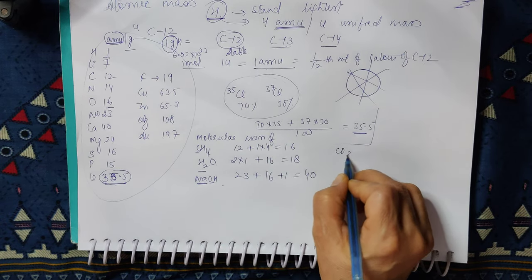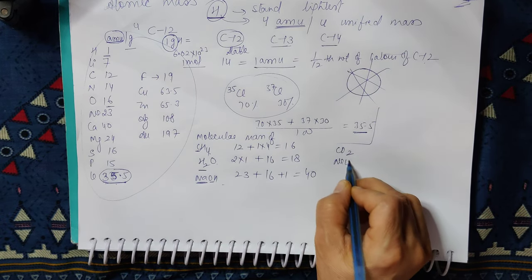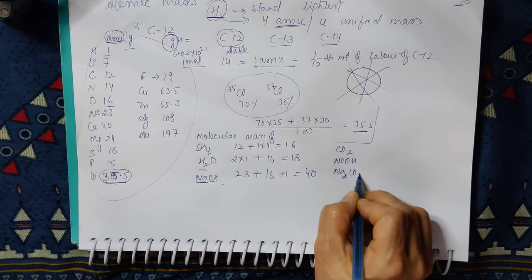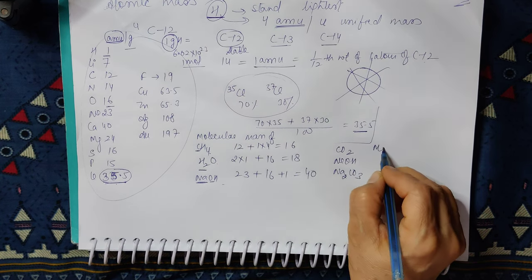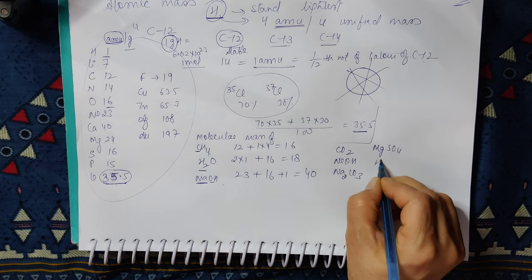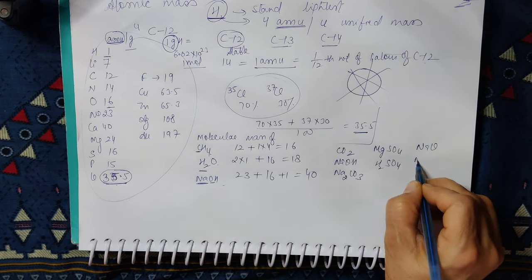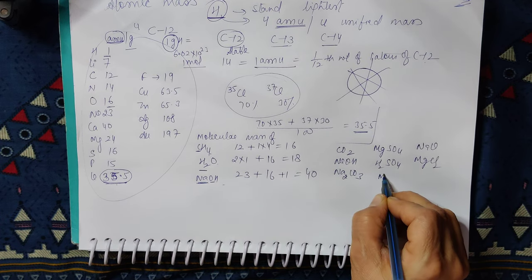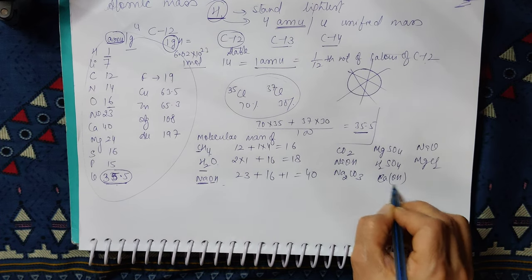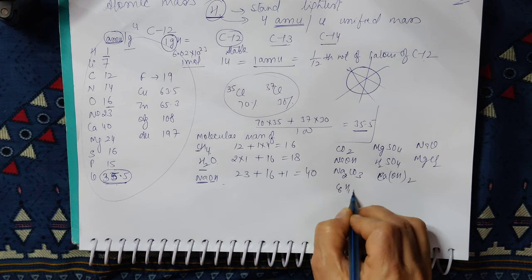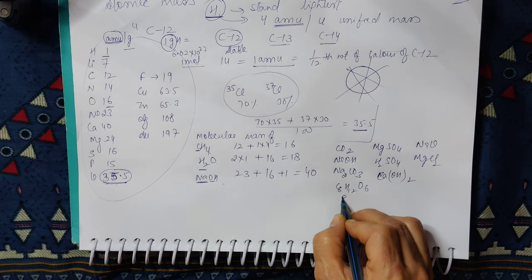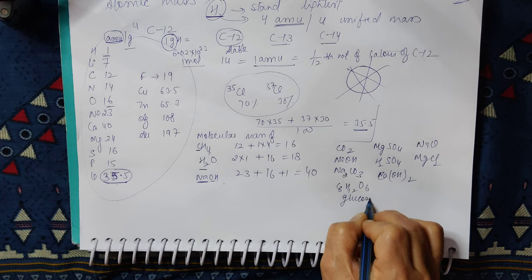Who will calculate CO2, NaOH? Like I have calculated NaOH. Na2CO3, MgSO4, H2SO4, NaCl, MgCl2, Calcium Hydroxide, C6H12O6 - this we call Glucose.